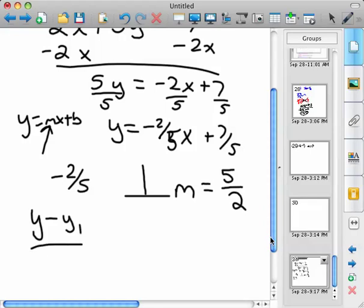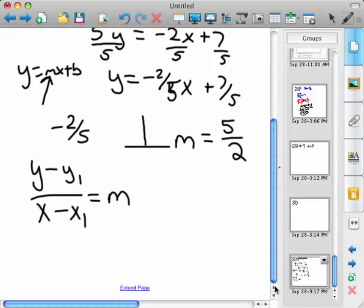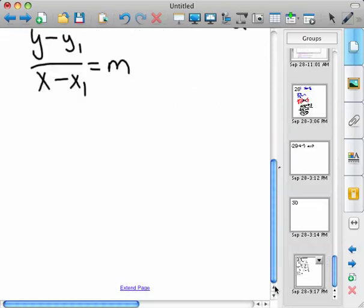So (y - y1)/(x - x1) = m is the point slope form. So we'll take, we know our point, which is (5, -2). And we know our slope, which is positive 5/2.